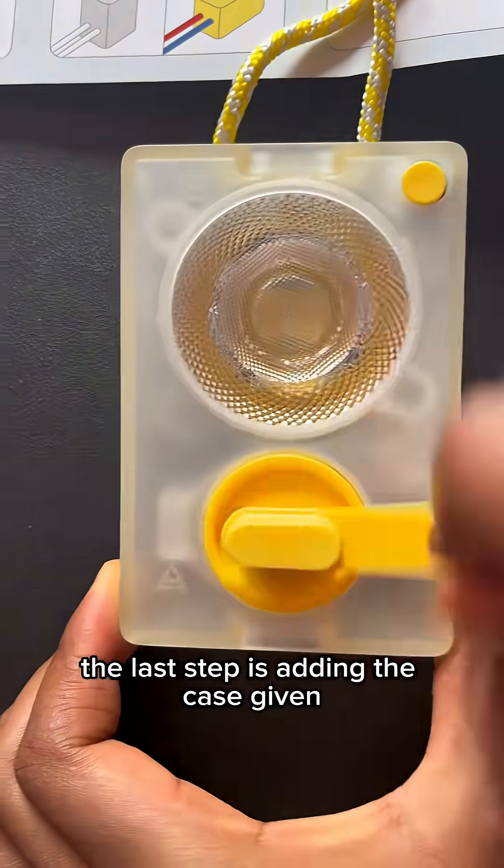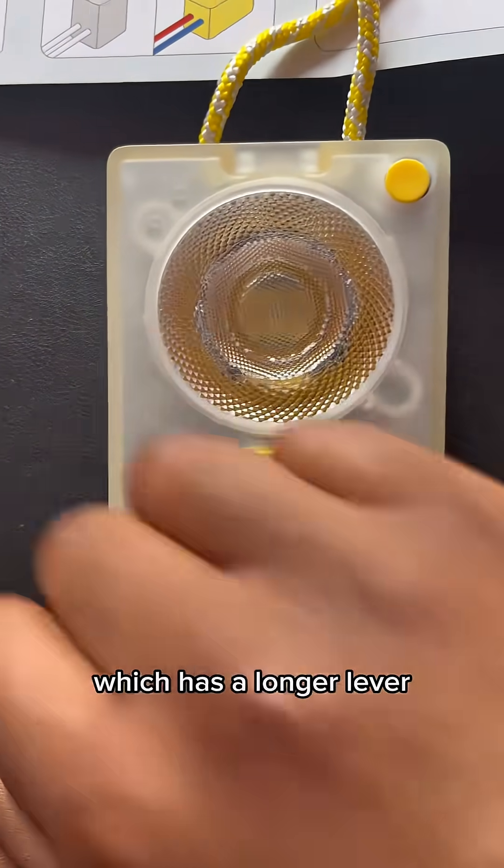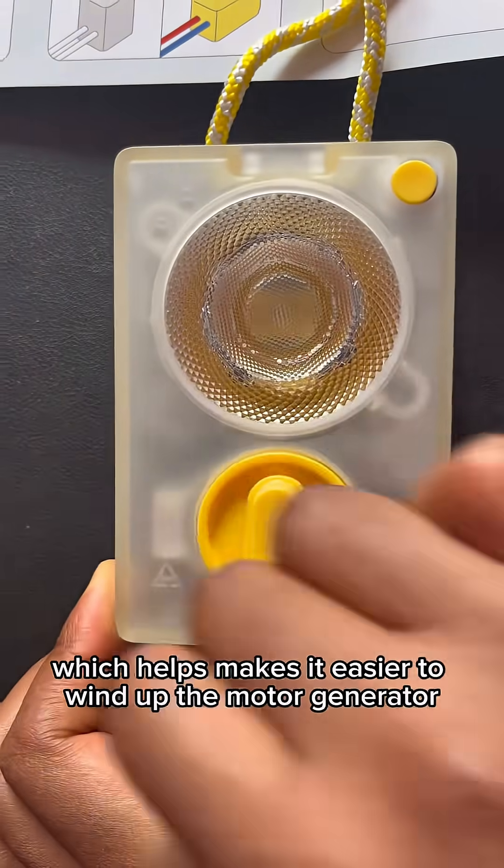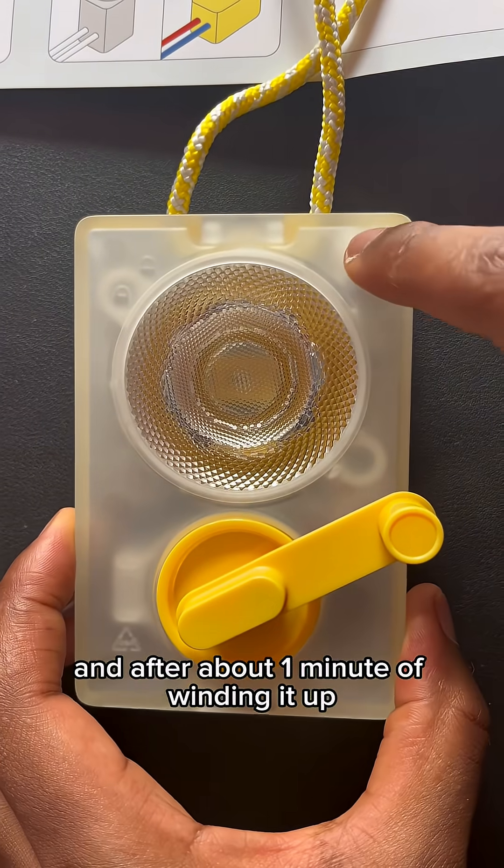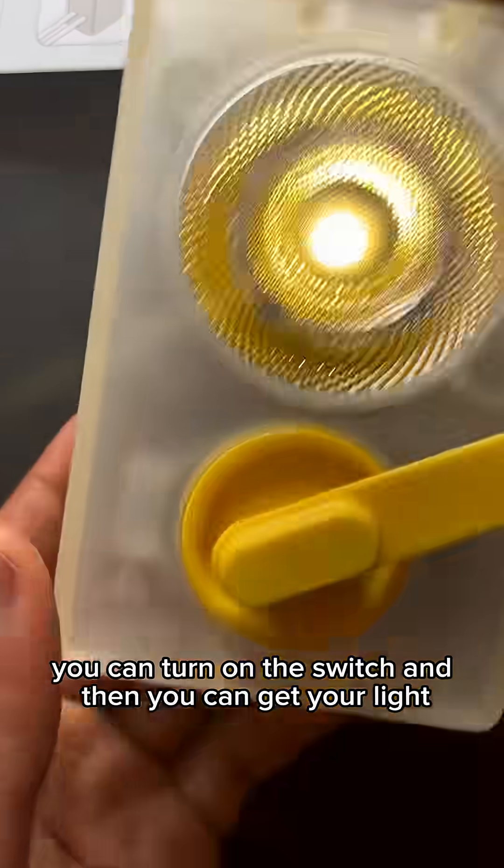The last step is adding the case given which has a longer lever which makes it easier to wind up the motor generator. And after about one minute of winding it up, you can turn on the switch and then you can get your light.